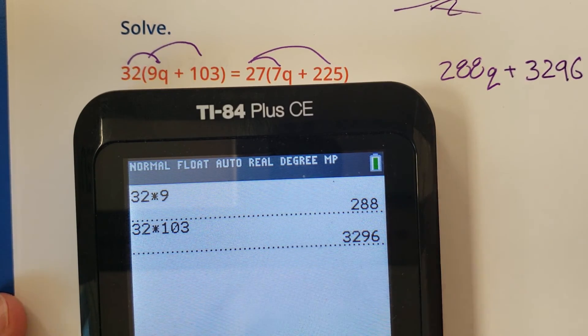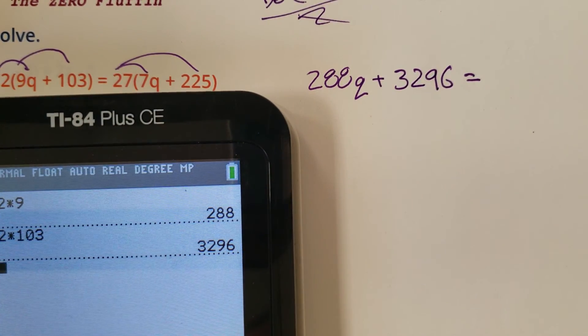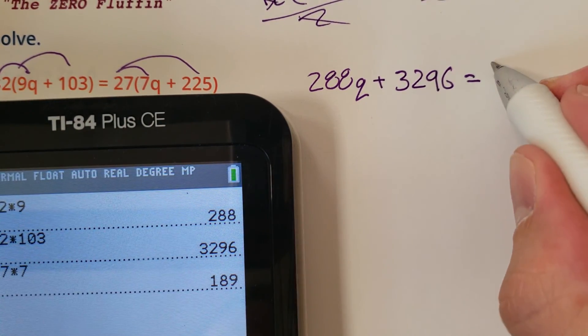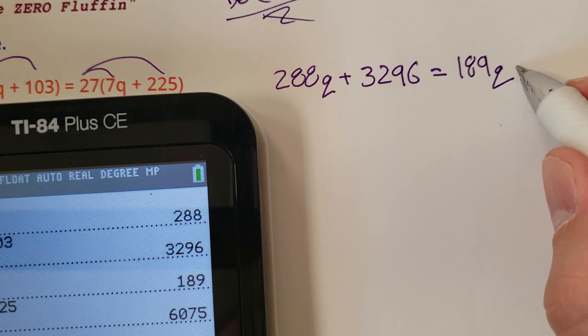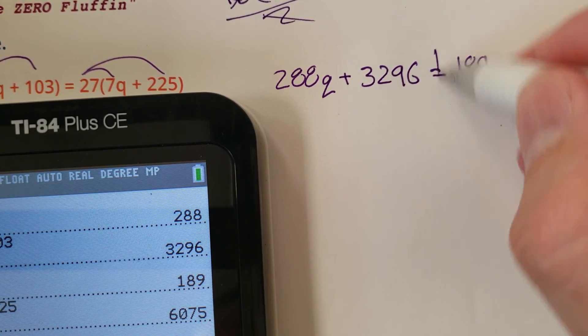3296 equals 27 times 7 which is 189Q, and then 27 times 225 is 6075.